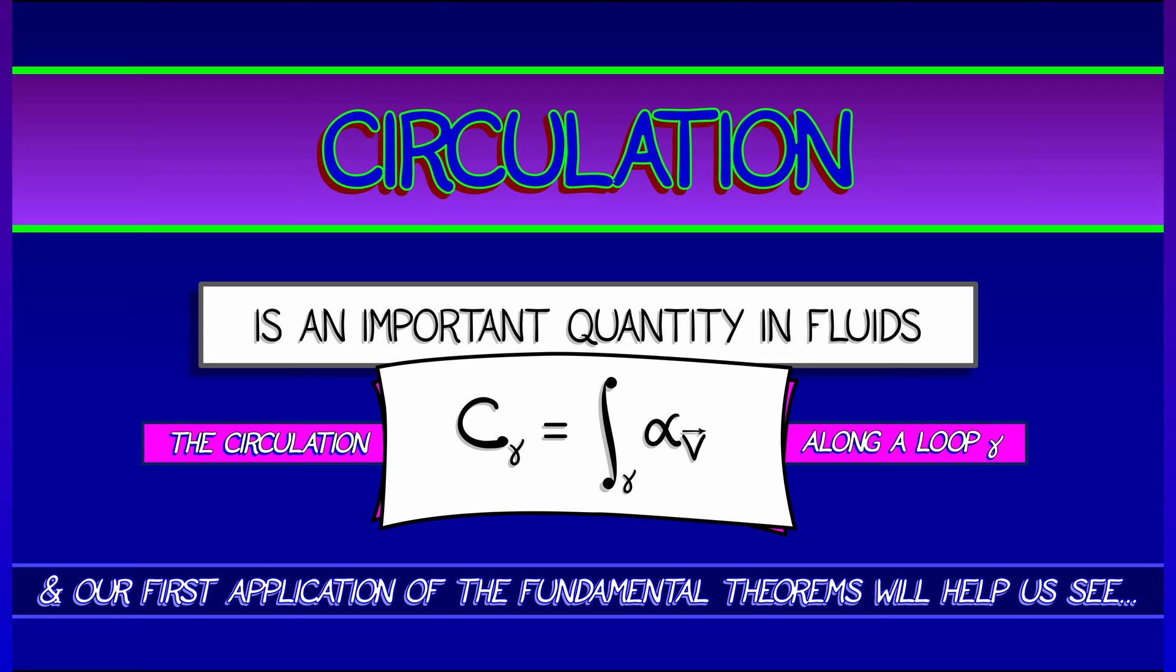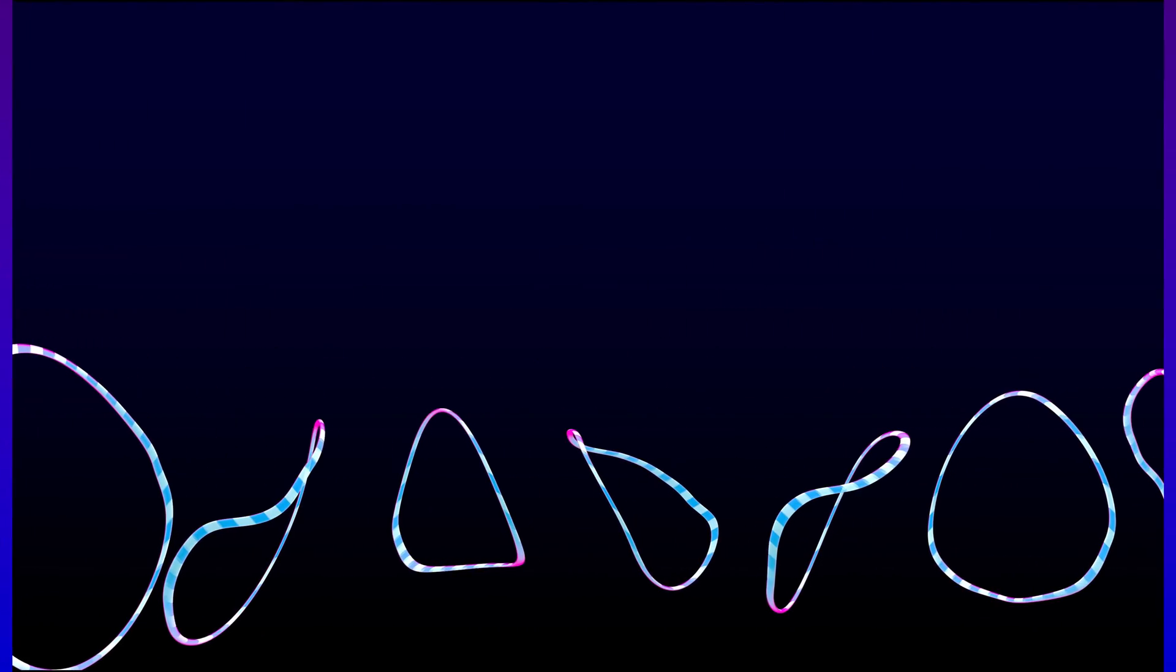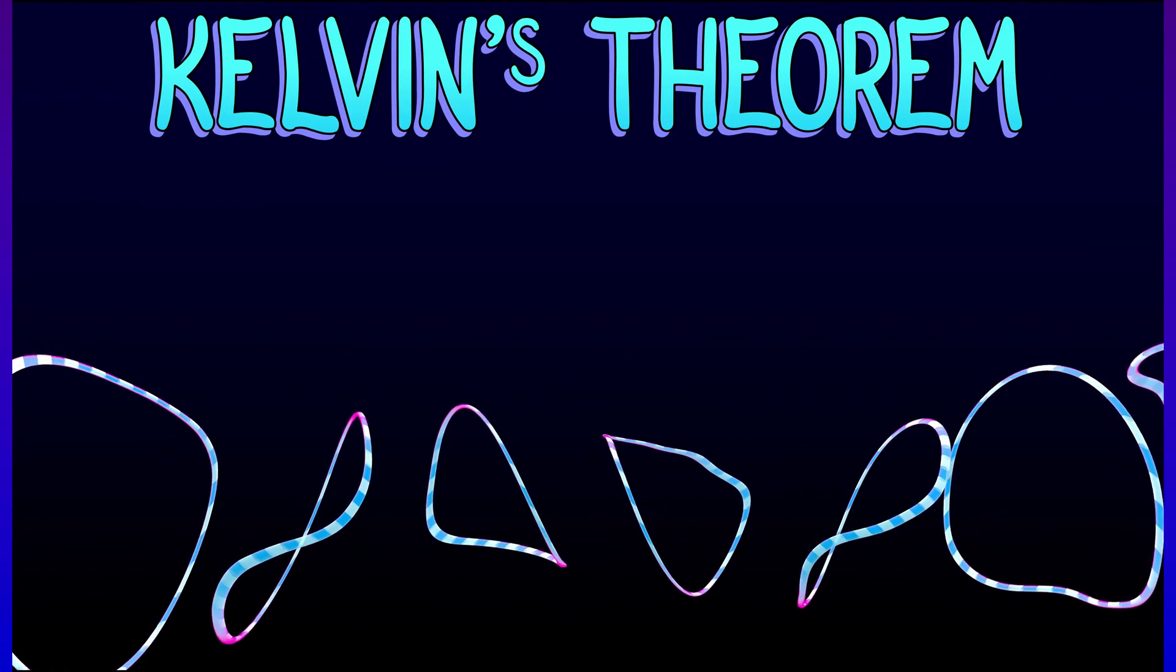Now our first application of all the big fundamental theorems is going to tell us something about circulation along a loop in a perfect fluid. This is a theorem, a big theorem. It is Kelvin's theorem.